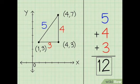5 plus 3 is 8, and 8 plus 4 is 12. 12 centimeters is the perimeter of this triangle.